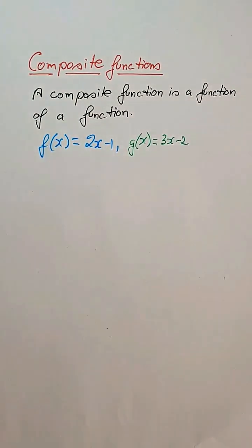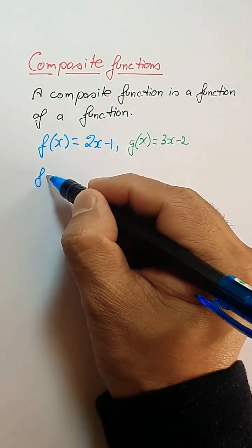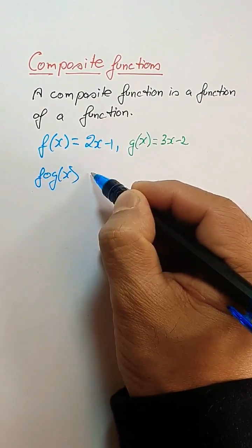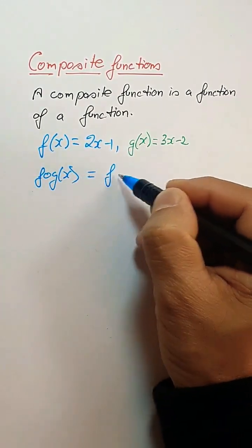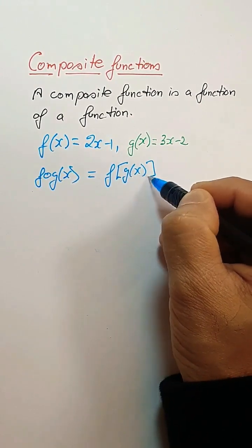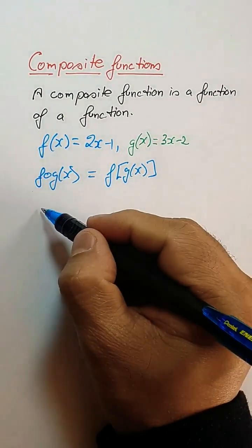The composite function will be fog, written as fog of x, which is a composite function. You can write this also as f of g(x).